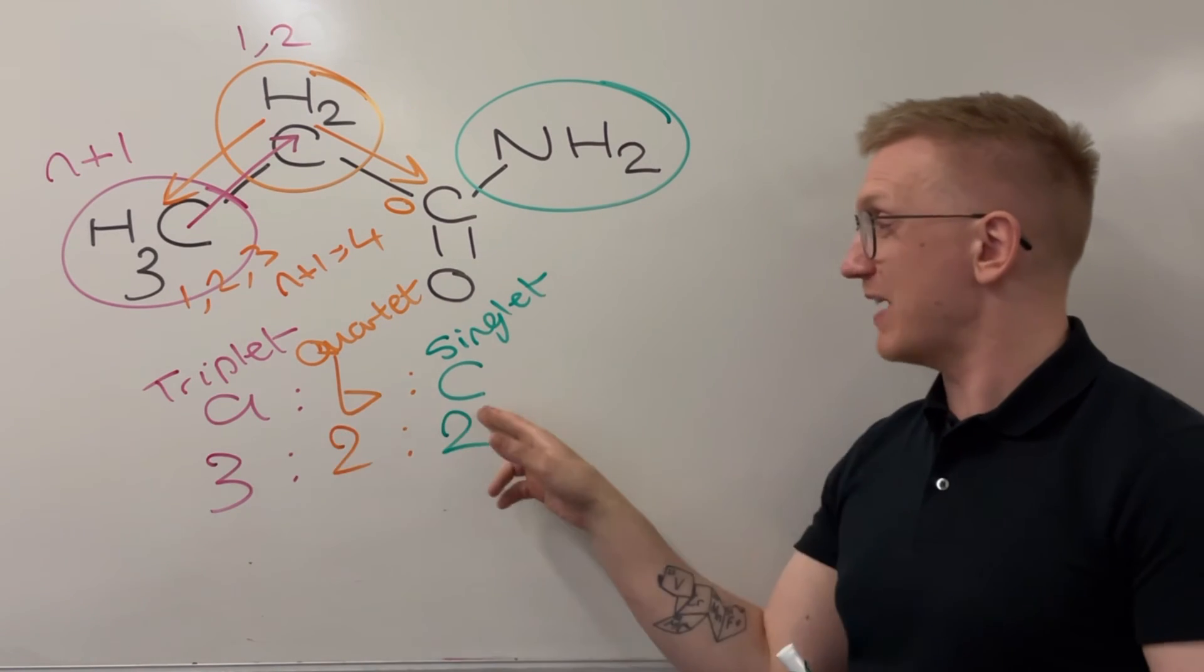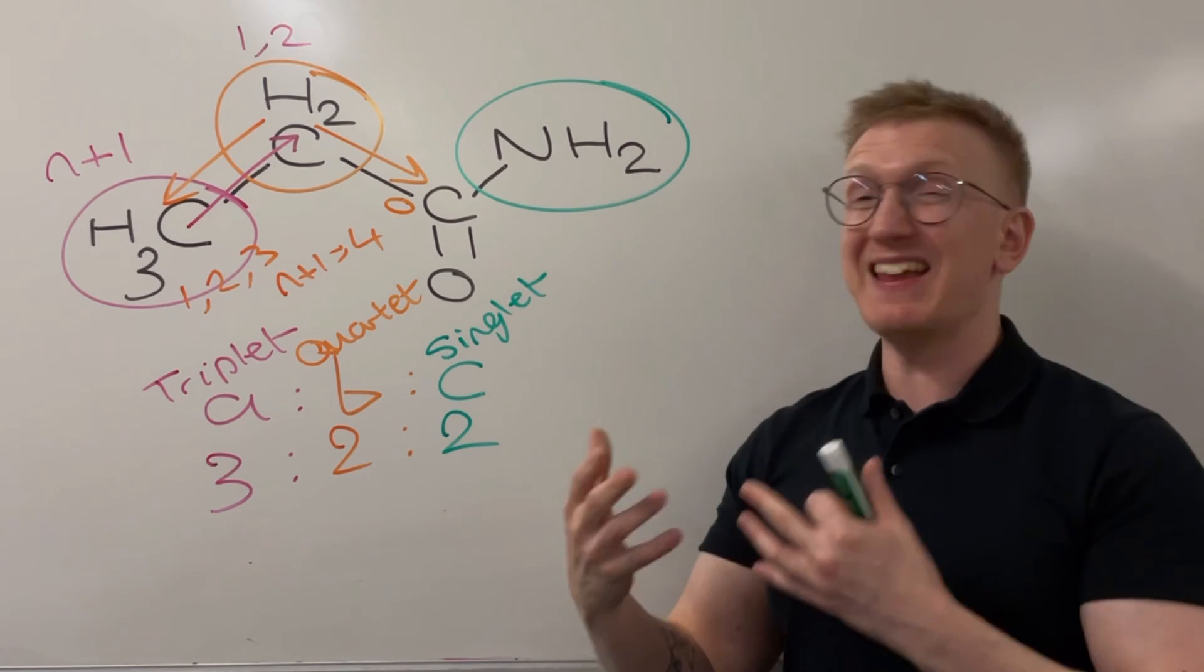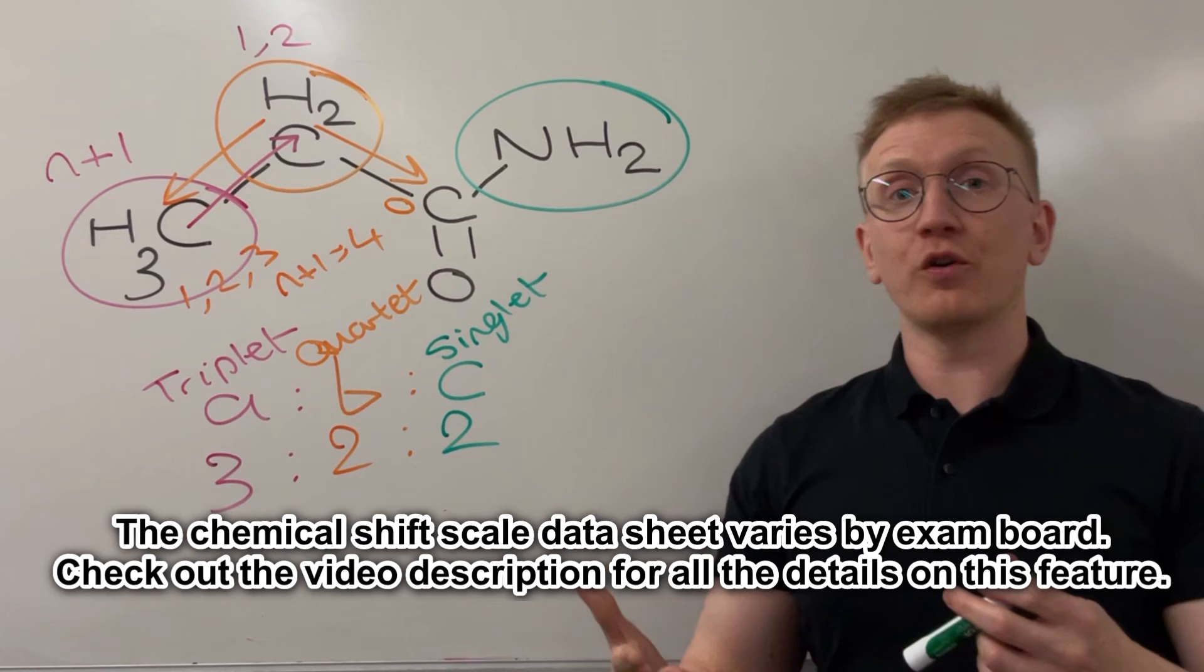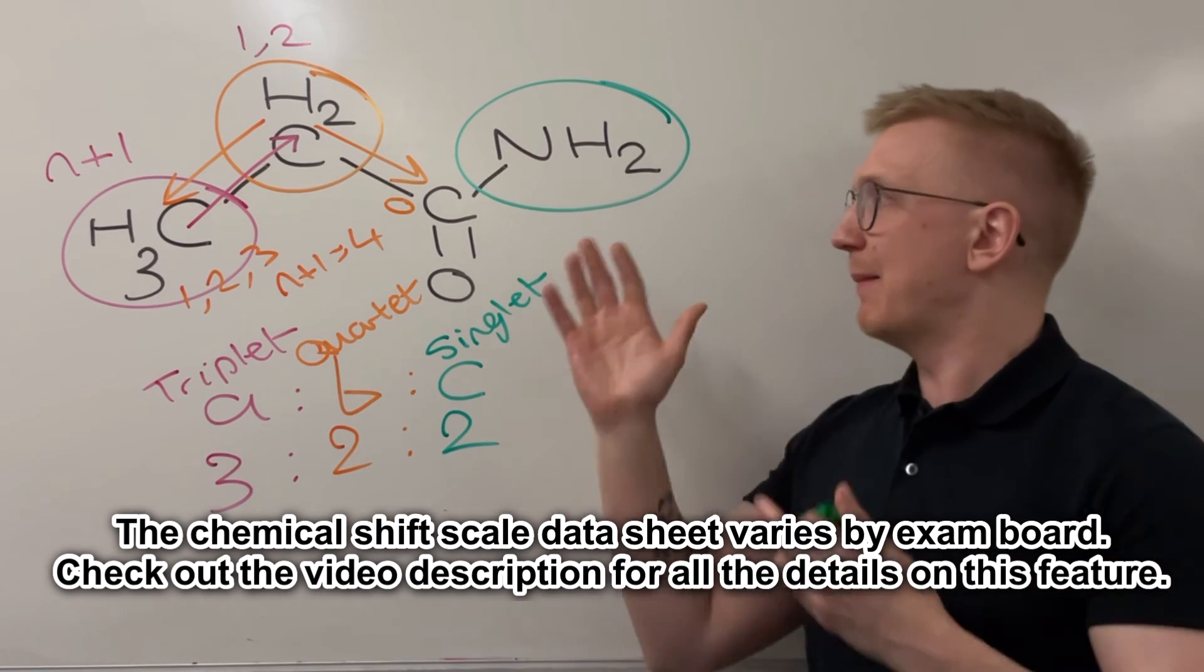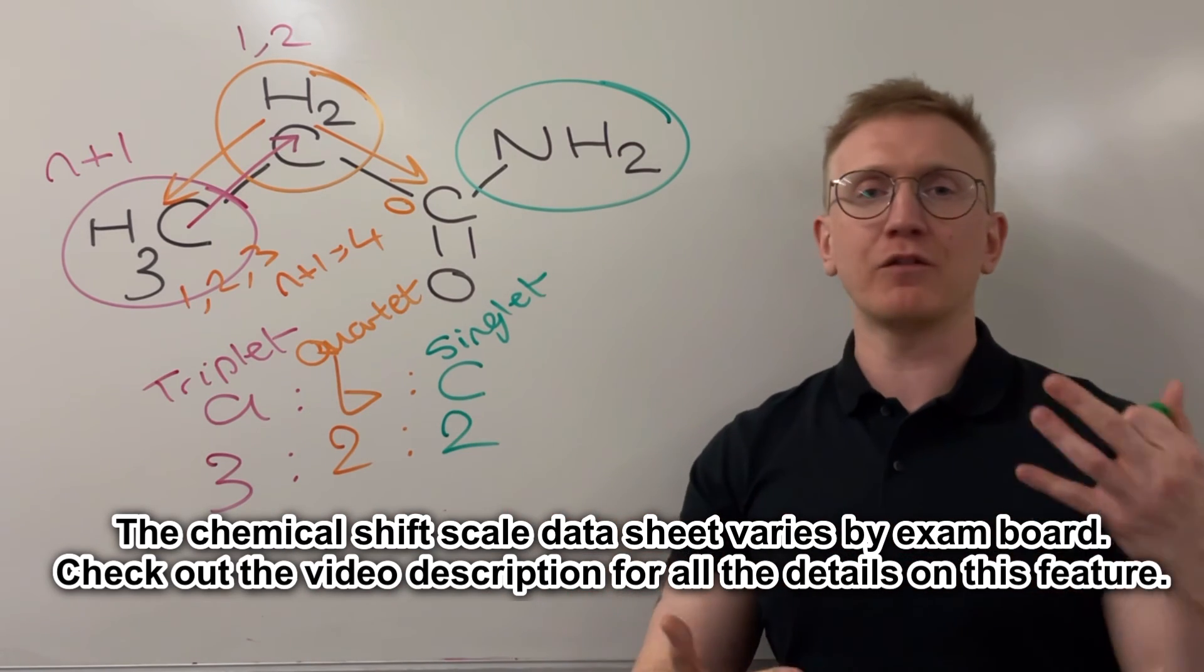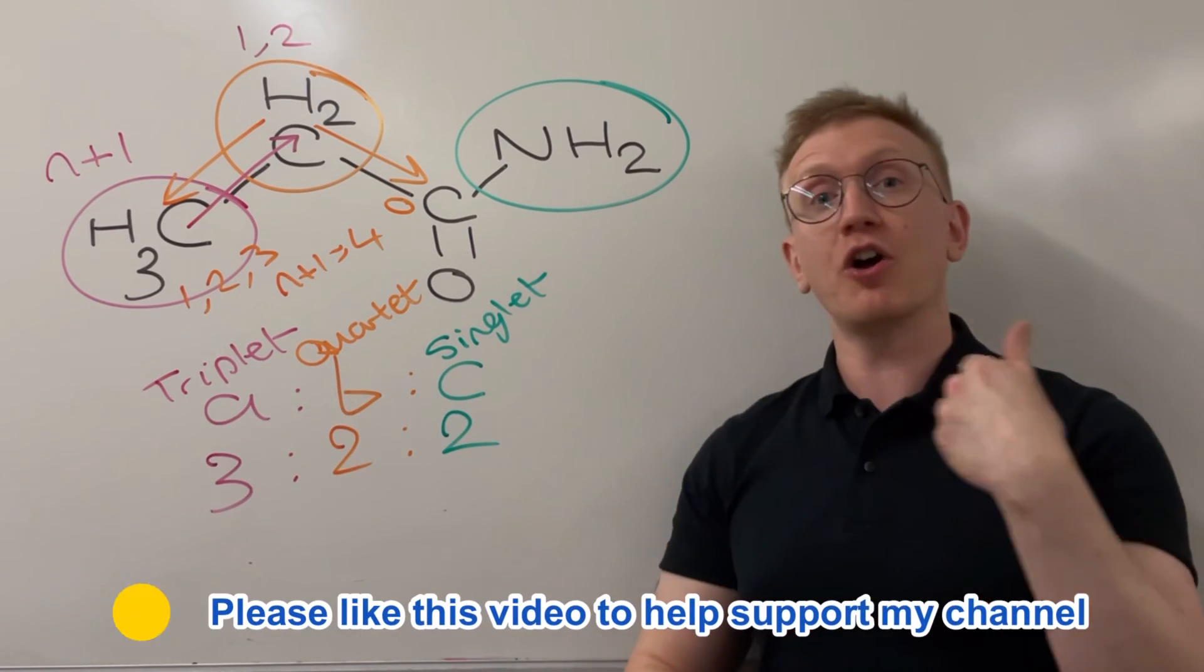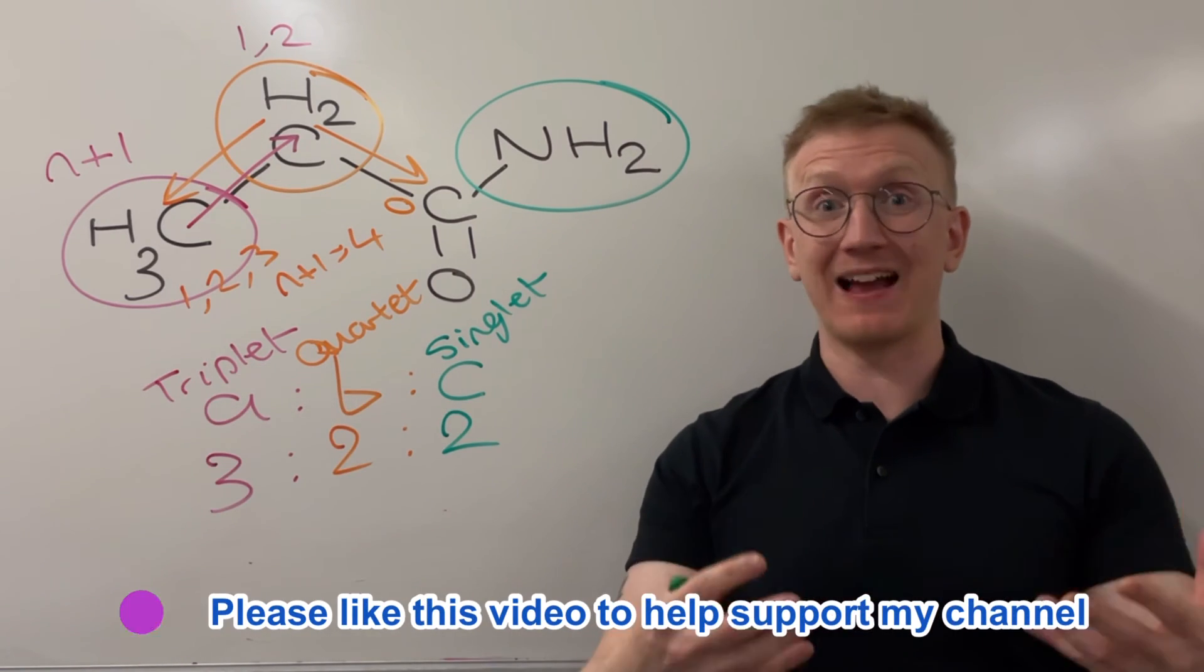Which is just going to have that ratio feature, and the fact that it is even a peak, as a way of trying to decipher what it is. We could, of course, use the chemical shift scale for this, but I just want to focus on splitting patterns, ratios, and the presence of peaks for this particular tutorial, because you've got the chemical shift scale in the exam to lean on.